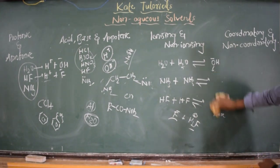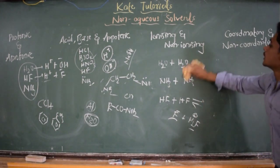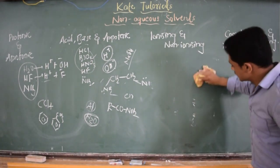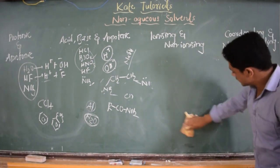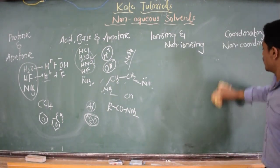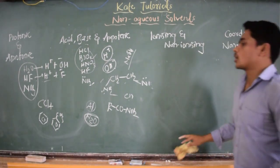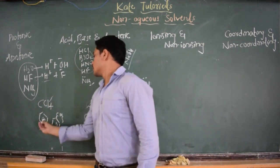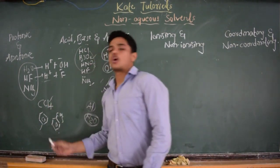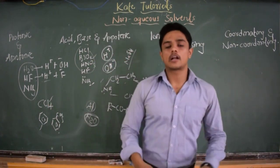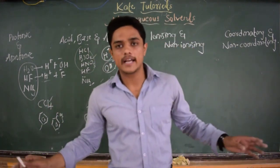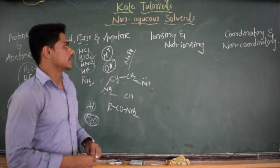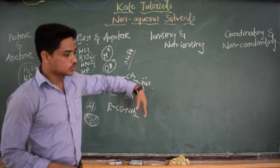Next, non-ionizing solvents. The non-ionizing solvents are again the organic solvents — solvents such as CCl₄, benzene, and toluene. They are not going to ionize; hence these are non-ionizing solvents.